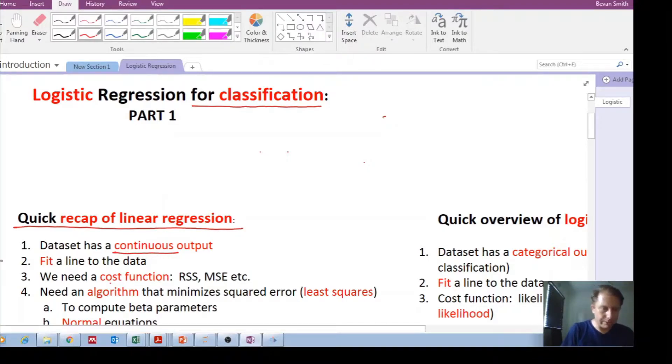Which is our model, or even our hypothesis. In order to fit that line we need a cost function, and we saw that we could use residual sum of squares (RSS), mean squared error, mean absolute error, various types of cost functions.